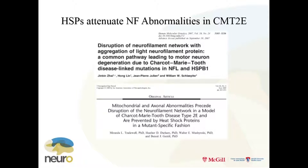HSPs can attenuate neurofilament abnormalities — regardless of the chicken-and-egg question, if you can get attenuation of abnormalities determined by a mutation in NFL by overexpressing chaperones, that's significant. Benoit found that depending on the mutation — whether C-terminal or N-terminal — different HSPs were effective, and it also depended on whether it was a DRG or motor neuron. Collectively, upregulating chaperones may have possibilities for treatment of these forms of Charcot-Marie-Tooth.